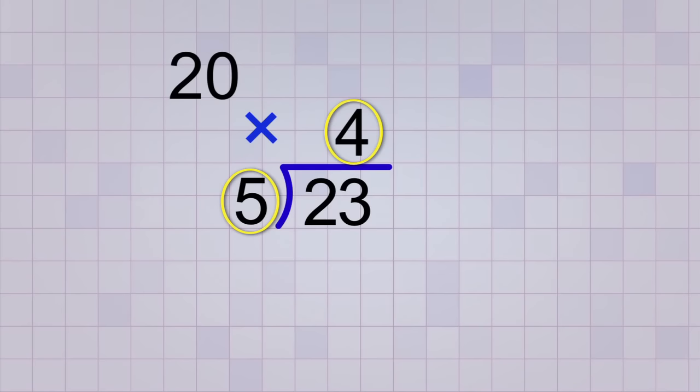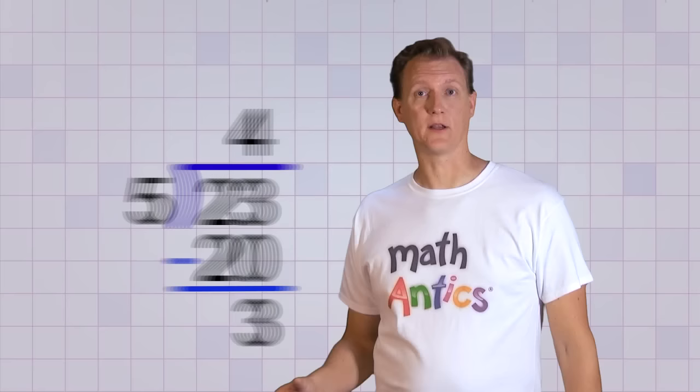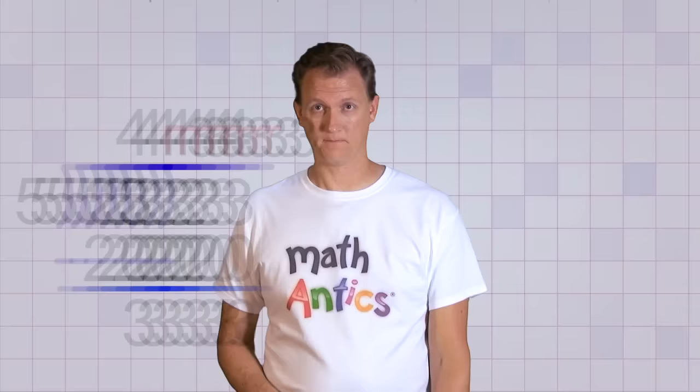Next, we need to do the step where we multiply the answer, 4, by the number of groups, 5, and we get 20, which we'll write below the number we're dividing up, 23. Now we subtract those numbers to see what our remainder is. 23 minus 20 is 3. Well, that's good. 3 is less than our number of groups, so it's a reasonable remainder. So our answer to 23 divided by 5 is 4 with a remainder of 3.